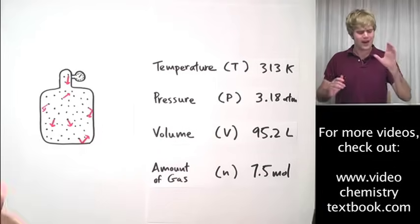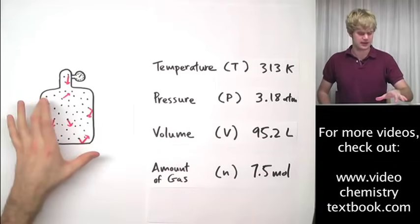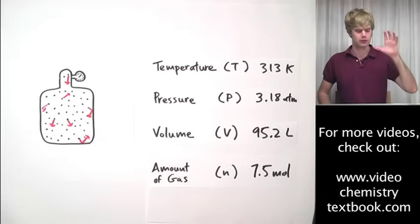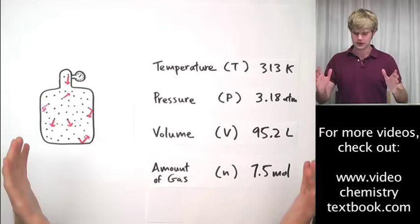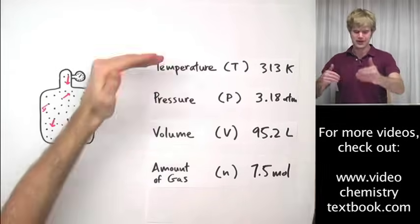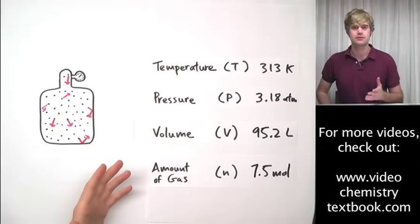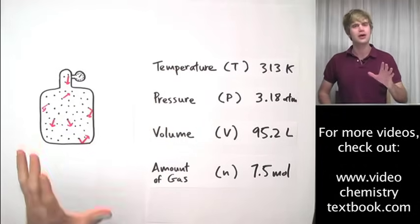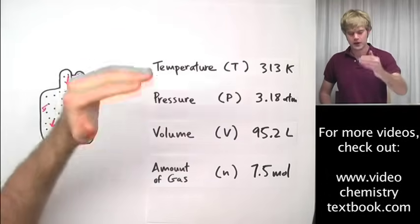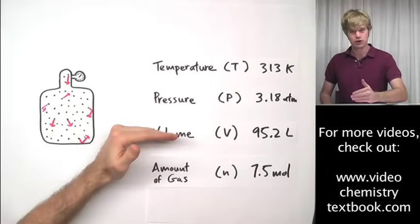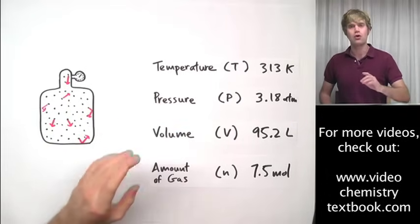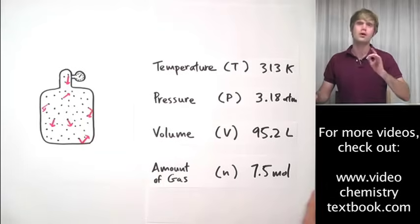Now whenever we have a sample of gas like this, you know, if it's a tank or it's in a balloon or wherever it is, we can describe it with these various characteristics. And it turns out that for any sample of gas, if we know three of these characteristics, we can figure out what the fourth is. All we need to do is know three.